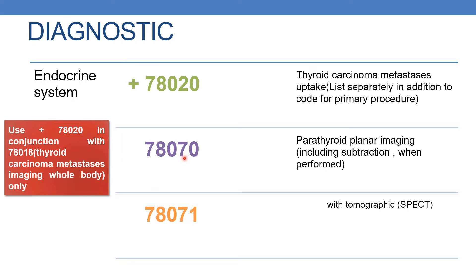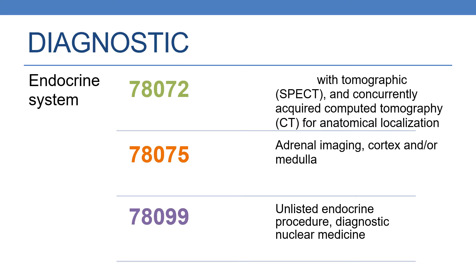The next code is 78070: parathyroid planar imaging, including subtraction when performed. The next is 78071: parathyroid planar imaging with tomographic study, that is nothing but SPECT. The next code is 78072: parathyroid planar imaging with tomographic and concurrently acquired computed tomography for anatomical localization.